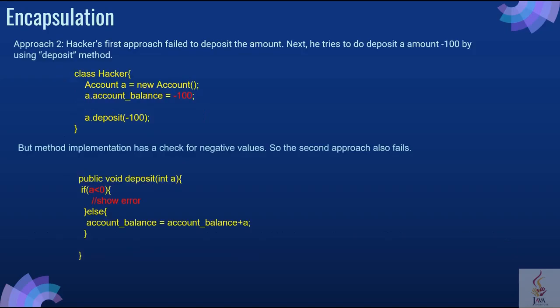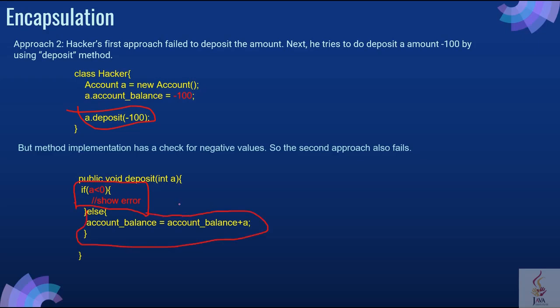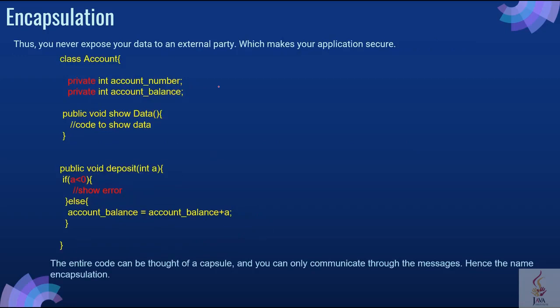Now let's see the second approach. The hacker's first approach has failed to deposit the amount. Next, he tries to deposit the amount minus 100 by using the deposit method. But the method implementation has checked for negative values. So the second approach also fails.